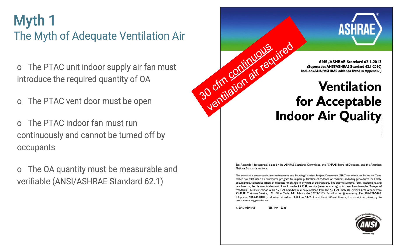For a PTAC unit to perform this ventilation function, several things must happen: the PTAC indoor supply fan must introduce the required quantity of outside air, the PTAC vent door must be open, and the PTAC indoor fan must run continuously. This is often a problem because occupants control the PTAC units and will either turn off the fan or reduce the fan speed.